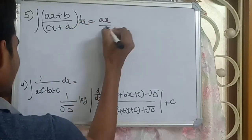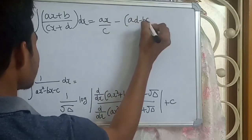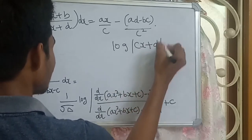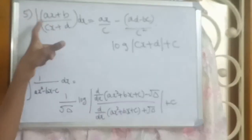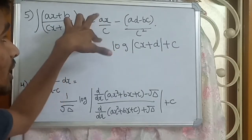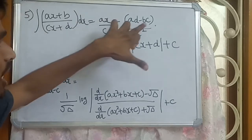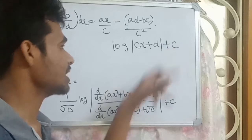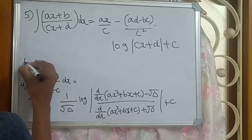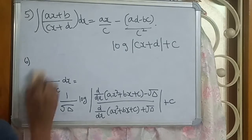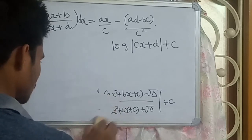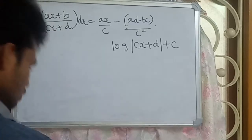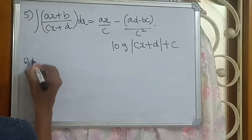Fifth formula: integration of ax plus b by cx plus d dx equals ax by c minus (ad minus bc) by c squared times log of cx plus d, plus C.